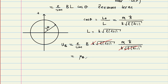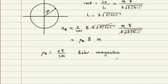The Bohr magneton μ_B = eℏ/(2m) is a universal constant with value 9.27 × 10⁻²⁴ joules per tesla. You can also convert it to electron volts. So the Zeeman splitting depends only on M and the magnetic field B.